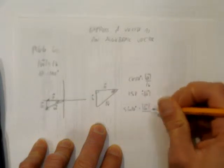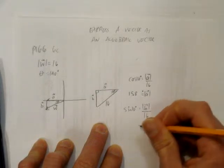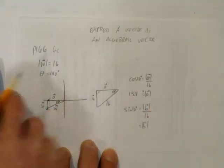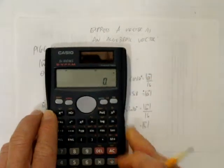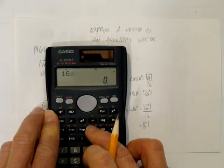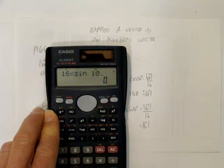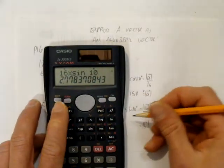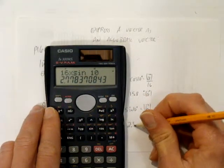The magnitude of vector b over 16. So the magnitude of vector b, in this case, is 16 times sine of 10 degrees, which is 2.8.